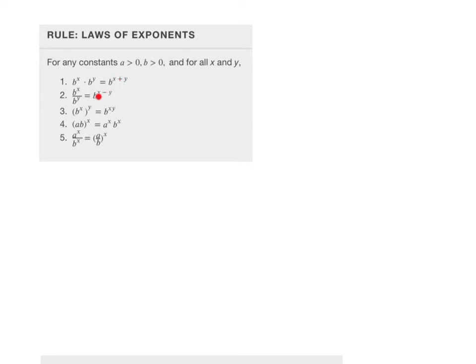Now some rules of exponents. Same base multiplication: add the exponents. Same base division: subtract the exponents. Power to a power: the exponents multiply together. A product raised to a power: that power applies to both entries in the parentheses — like distributive property. Important: (a + b)^x does NOT equal a^x + b^x — that is false. And for a quotient, a^x / b^x, where both terms have the same exponent, you can pull the exponent out and write the fraction in parentheses, which sometimes helps with simplifying.